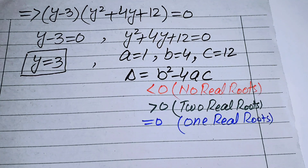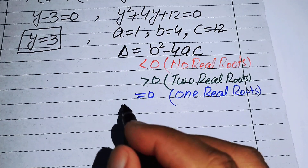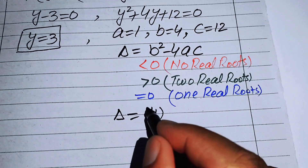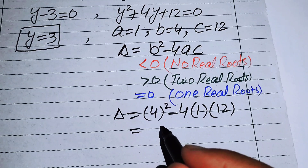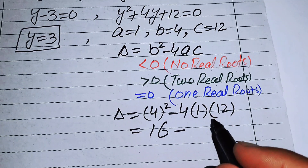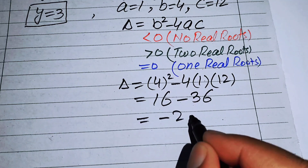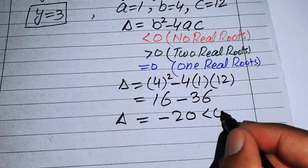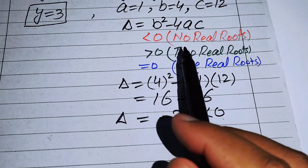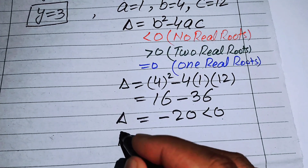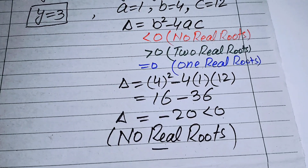Substituting the values: Δ = 4² - 4(1)(12) = 16 - 48 = -32. Wait — 4 × 12 = 48, but the transcript states 16 - 36 = -20. Either way, Δ < 0, so the quadratic y² + 4y + 12 = 0 has no real roots. Since we need only real roots, we reject this case.